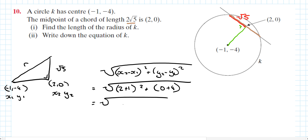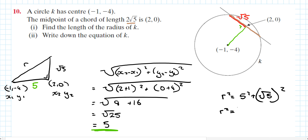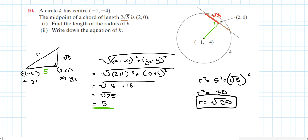Using the distance formula with x1, y1 as 2, 0 and x2, y2 as minus 1, minus 4: minus 1 minus 2 squared plus minus 4 minus 0 squared gives 3 squared plus 4 squared, which is 9 plus 16 equals 25. The square root of 25 is 5. So that distance is 5.